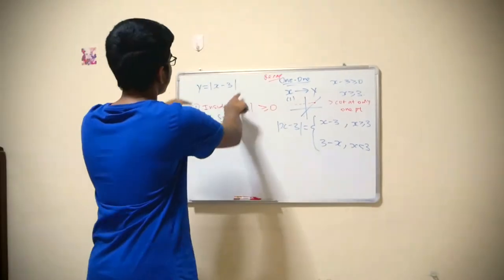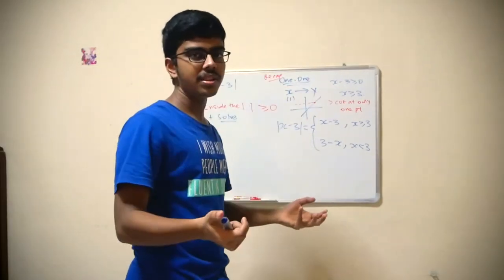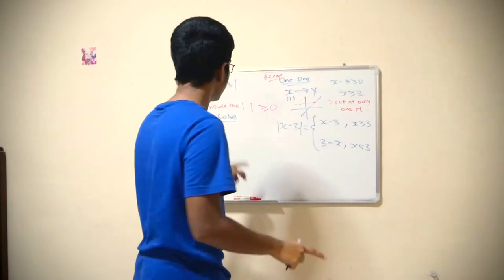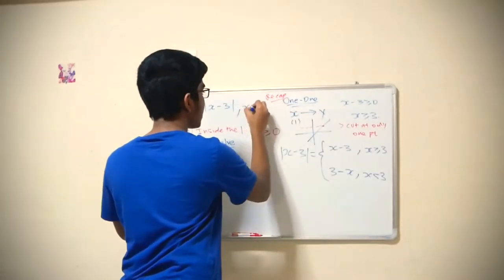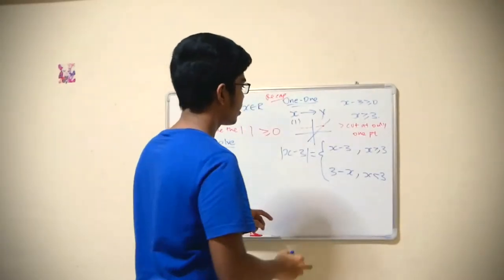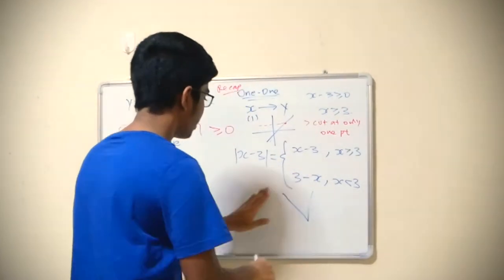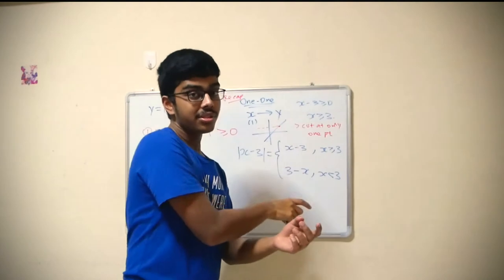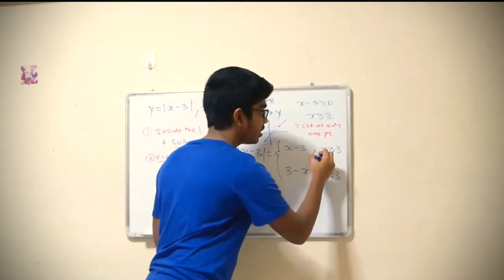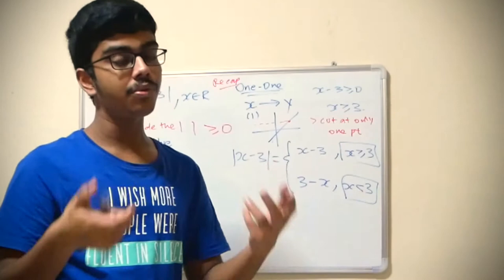So if you were to just use this modular sign and try to work out this inverse, it won't work because this domain is x element of R, so the graph is technically something like this. It's not one-to-one.